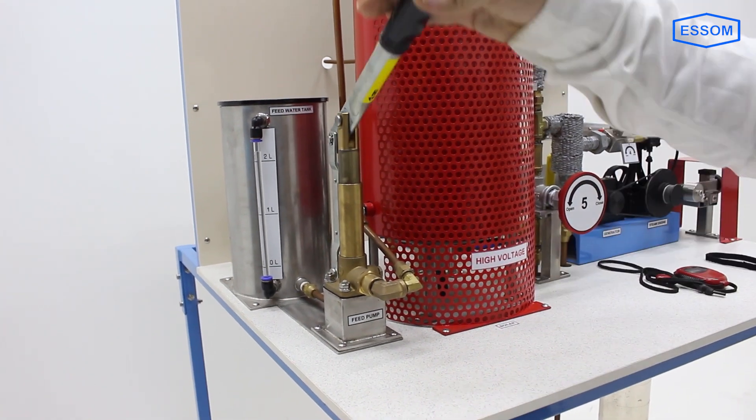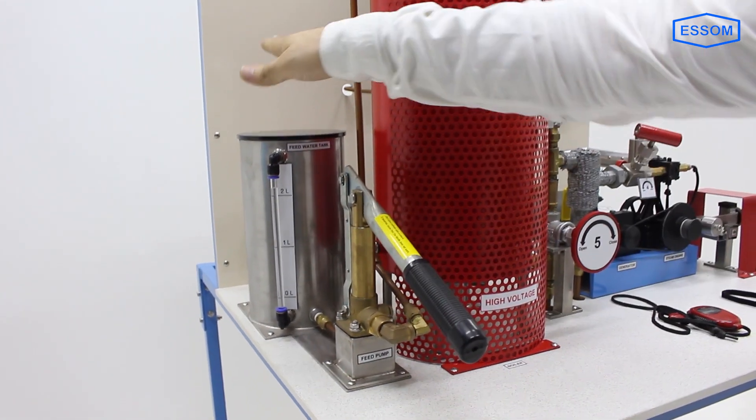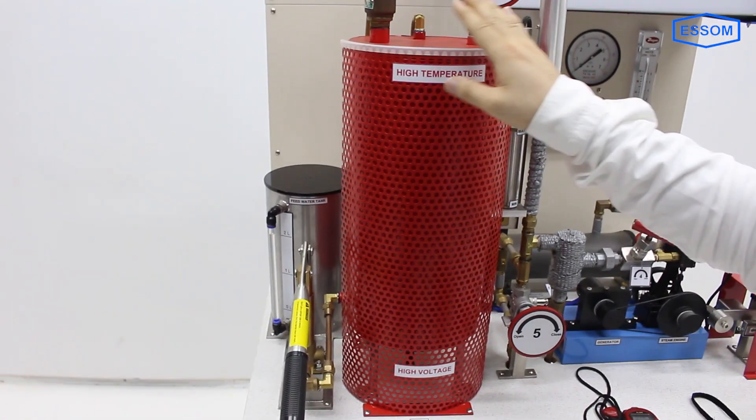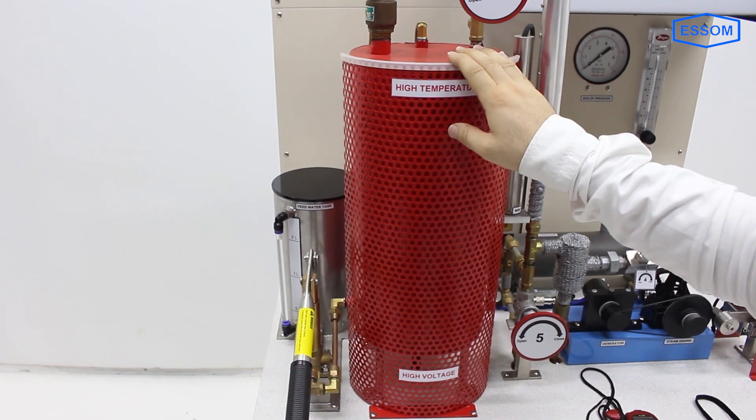A hand-feed pump supplies water from a feed tank to a small gas-fired boiler, or in this case an electric boiler, optionally.